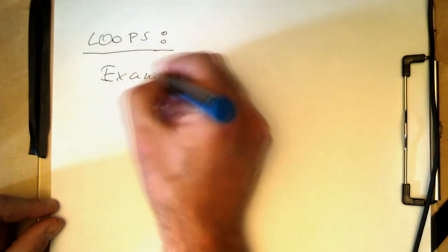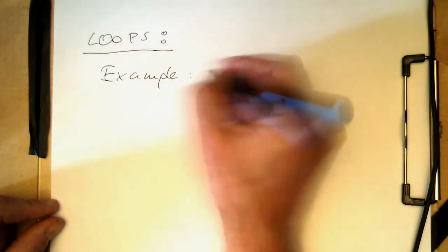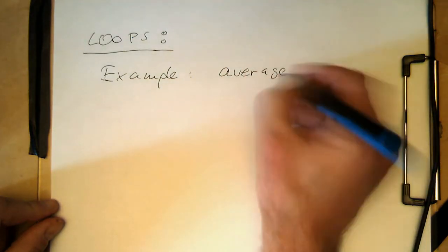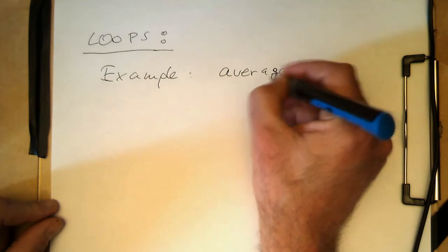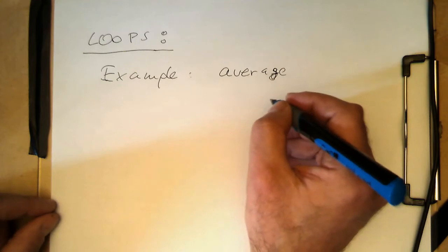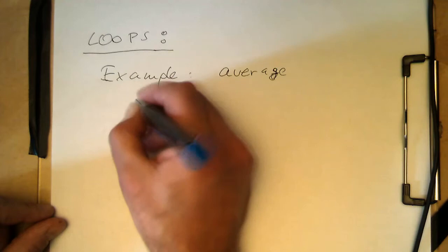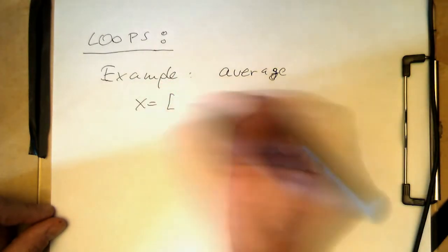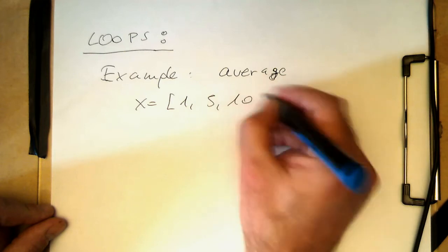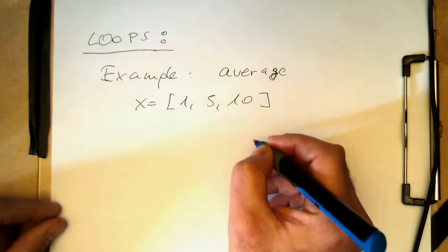And so our example to see how this works is the average. So we want to calculate the average. Of course, there's a Python function somewhere in the module already available, but we write our own average routine here, our average Python file. So let's say we have data x equals 2, 1, 5, and 10, and we would like to calculate the average out of this.